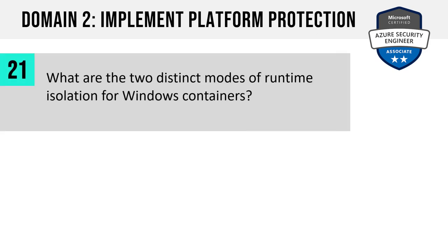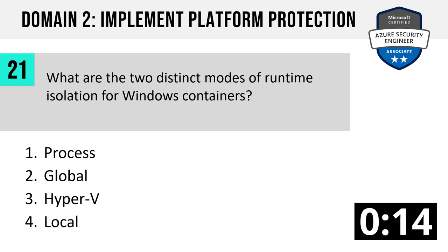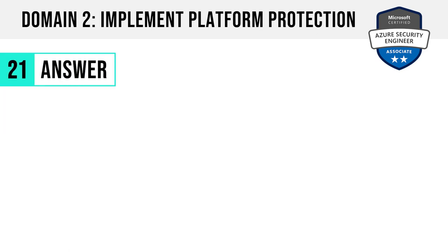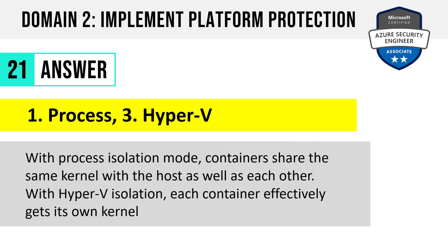Number 21. What are the two distinct modes of runtime isolation for Windows containers? Process, global, hyper-V, or local? The answer is one and three: process and hyper-V. With process isolation mode, containers share the same kernel with the host as well as each other. With hyper-V isolation, each container effectively gets its own kernel.